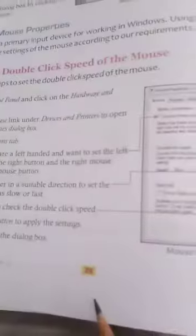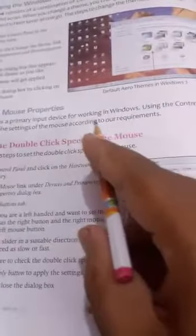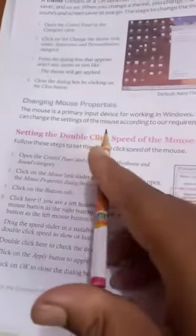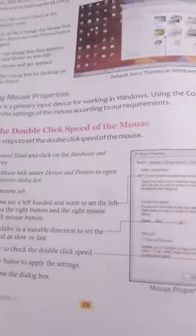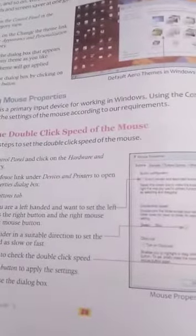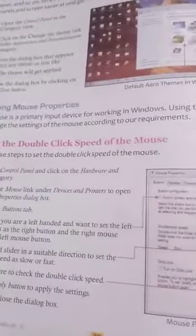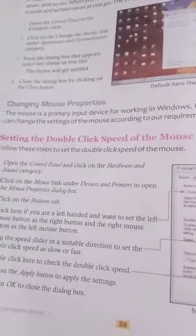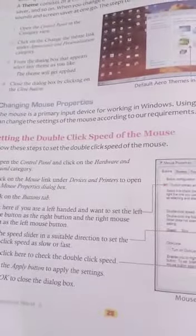We start with changing mouse properties. The mouse is a primary input device for working in Windows. Using the Control Panel, we can change the settings of the mouse according to our requirements. Mouse is a very important input device and you can easily change its properties using the Control Panel.